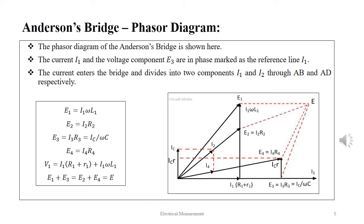E1 is given as I1 omega L1, E2 as I2 R2, E3 as I3 R3 also equal to IC by omega C and E4 as I4 R4.